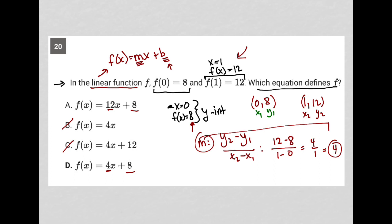That means my slope equals 4, and therefore choice D is the correct answer.